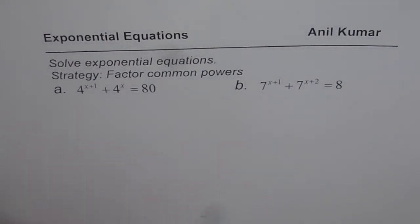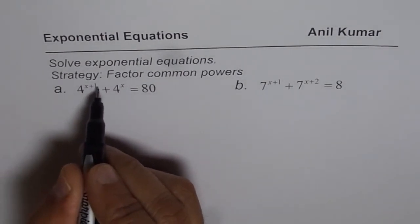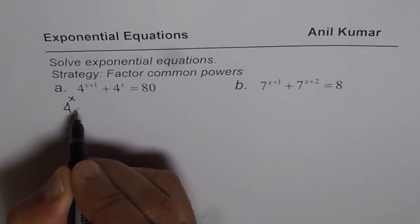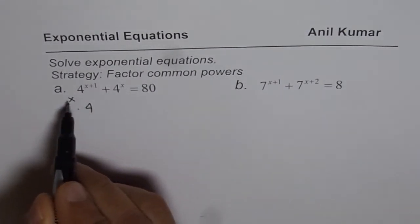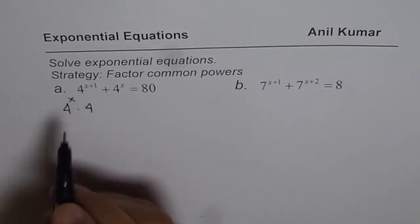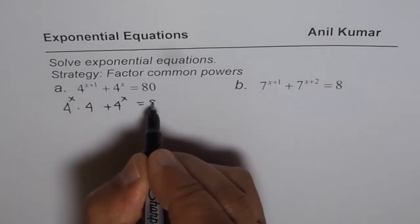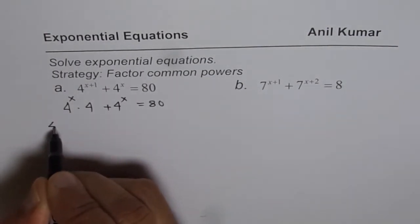Let us begin with the very first one. When I say 4 to the power of x plus 1, what does it mean? It means 4 to the power of x times 4. When you combine the powers, they get added up. Clearly, we see that 4 to the power of x is a common factor.